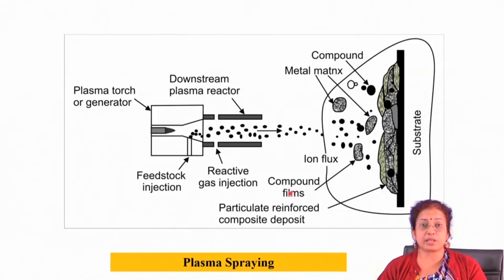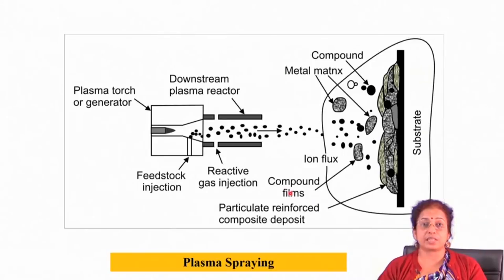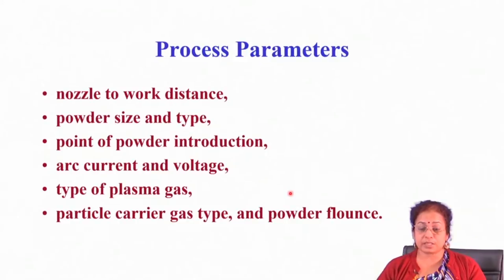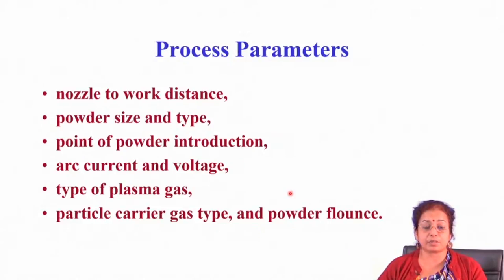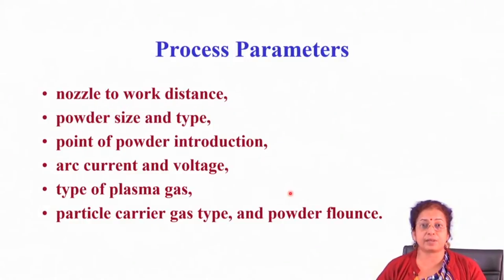A further advancement is reactive plasma spraying. When interested in metal matrix composite or ceramic coatings, a metal precursor powder can be used along with a reactive gas like nitrogen or oxygen. Inside the chamber, reactions occur, forming ceramic particles or metal matrix composites that get deposited onto the substrate. Process parameters include nozzle-to-work distance, powder size and type, point of powder introduction, arc current and voltage, type of plasma gas, carrier gas type, and powder flow rate.